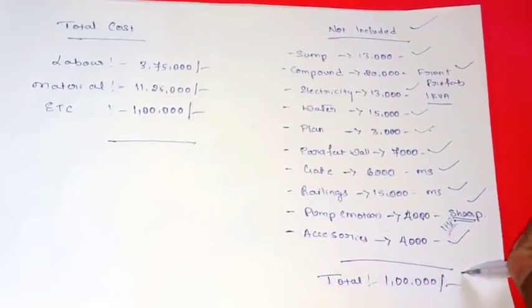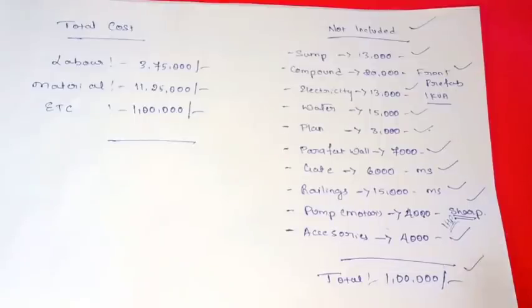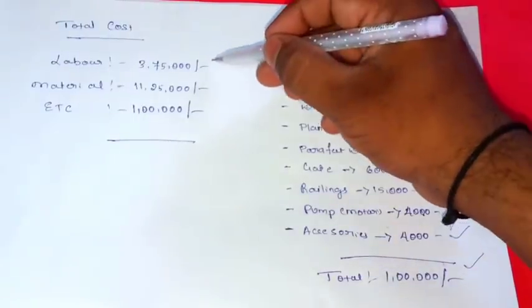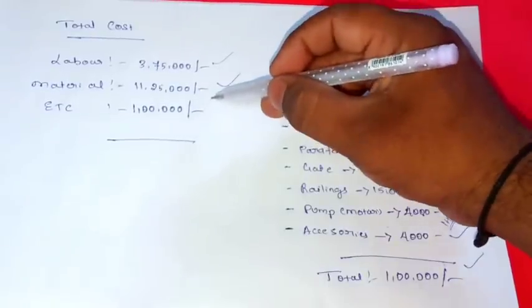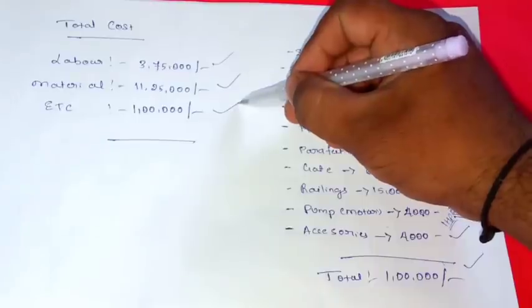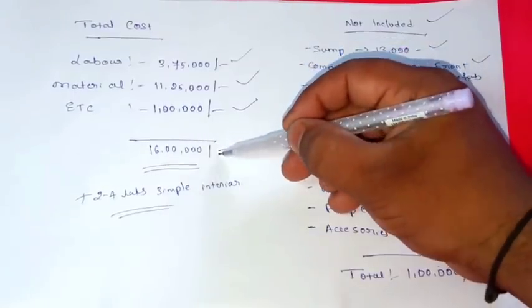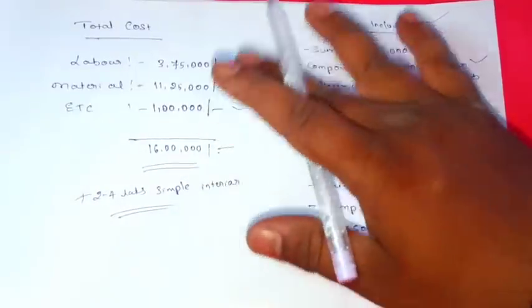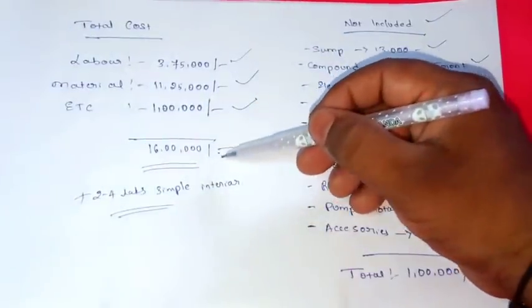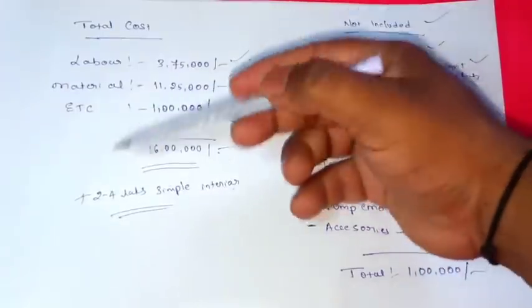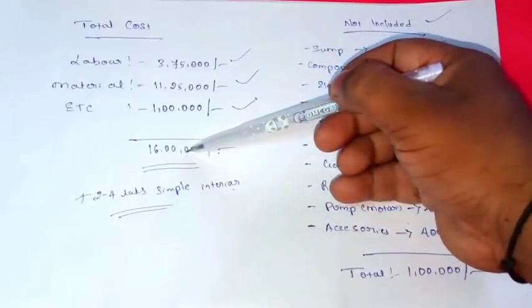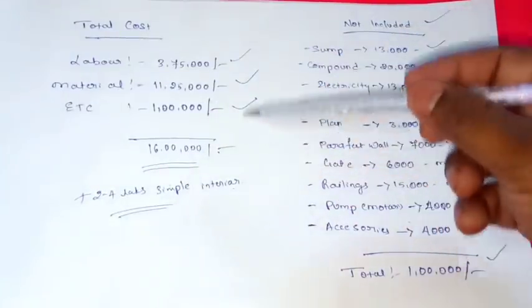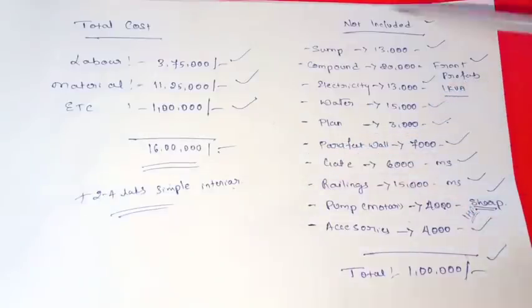Overall not included is 1,10,000. So overall cost is 1,60,000. You can add extra for 3 BHK. If you add more than that, most everything covered. I'm going to show you a screenshot.